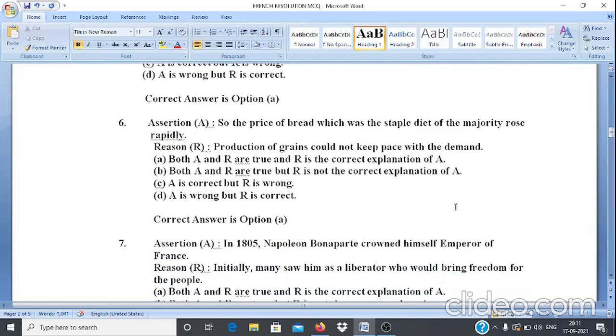Question 6. Assertion A: So the price of bread which was staple diet of the majority rose rapidly. Reason R: Production of grains could not keep pace with the demand. Here assertion and reason both are correct and reason is the correct explanation of assertion. That is why correct answer is option A.